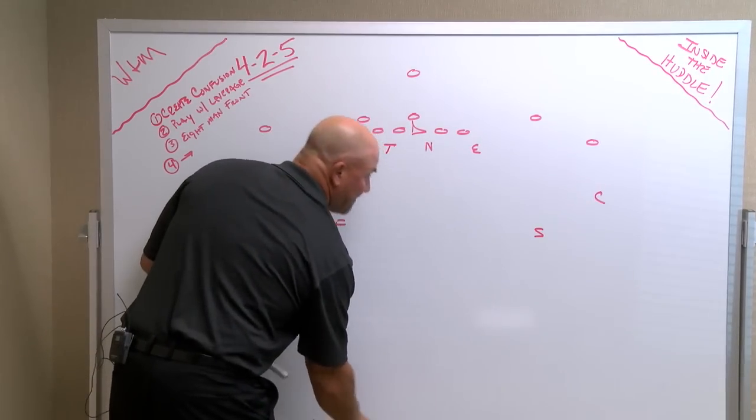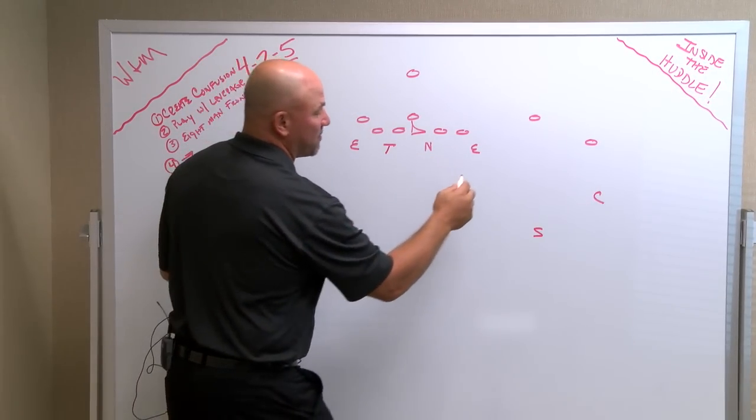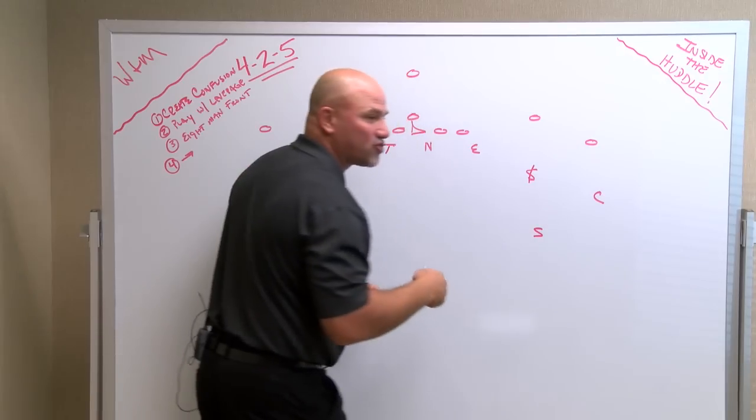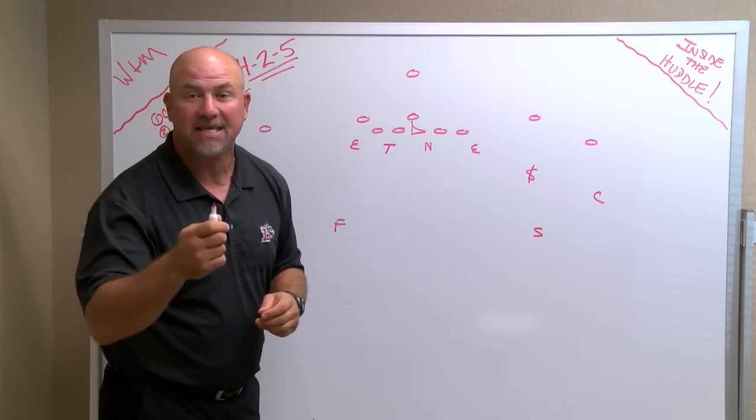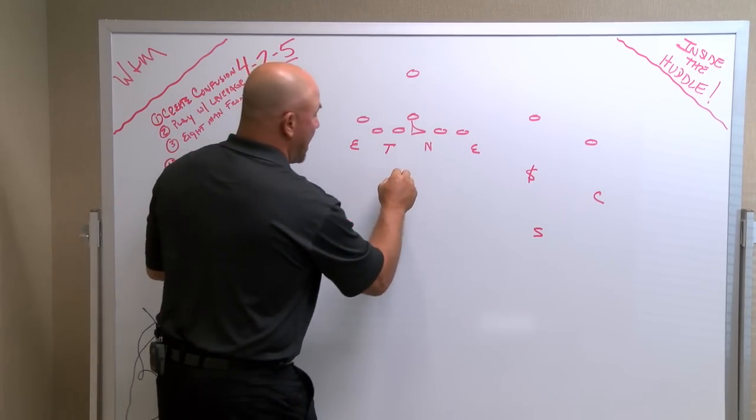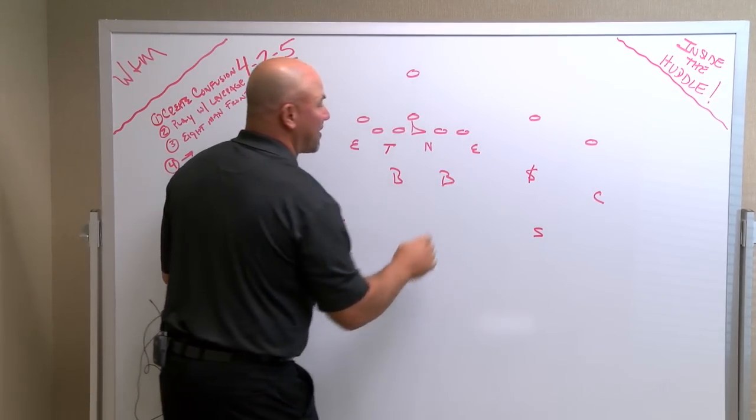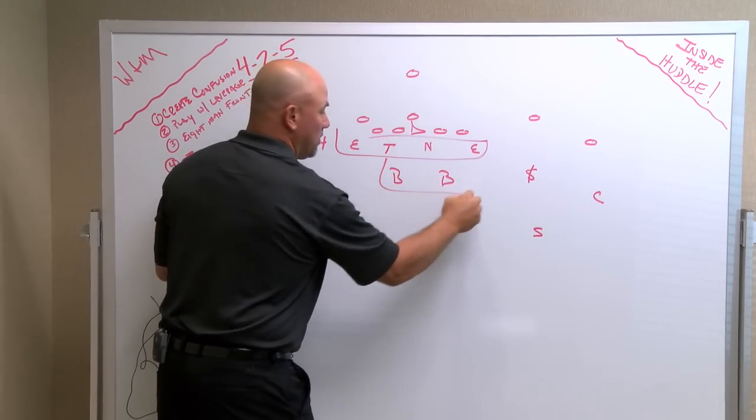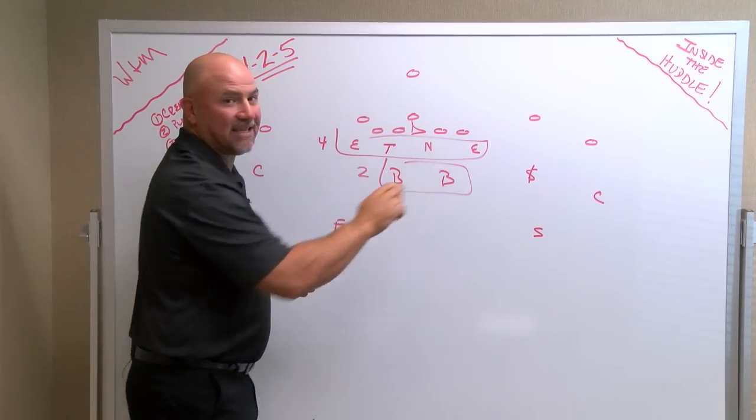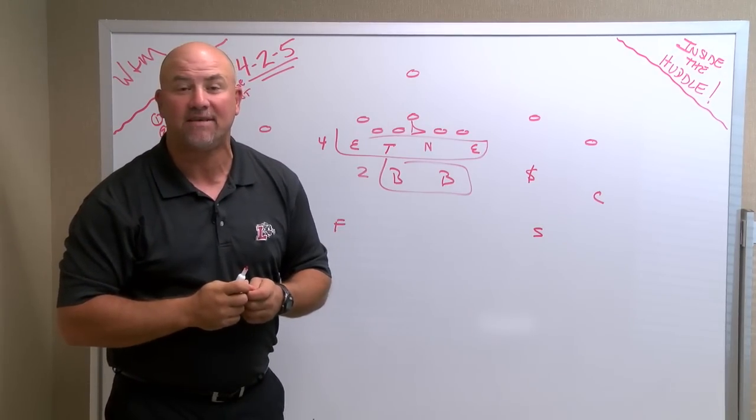But in the 4-2-5 you remove one of those linebackers from the box and he becomes basically a striker, a hawk, a cat, whatever you want to call him. He's an extra speedy outside linebacker. And then those two inside linebackers remain in the box. So we get what we call a 4-2-5 in the back. That's your 4-2-5 defense.